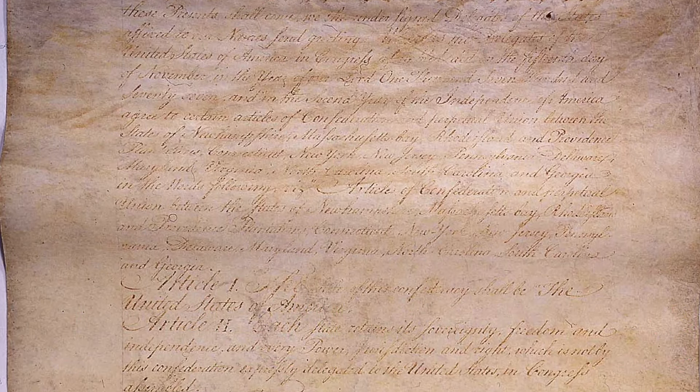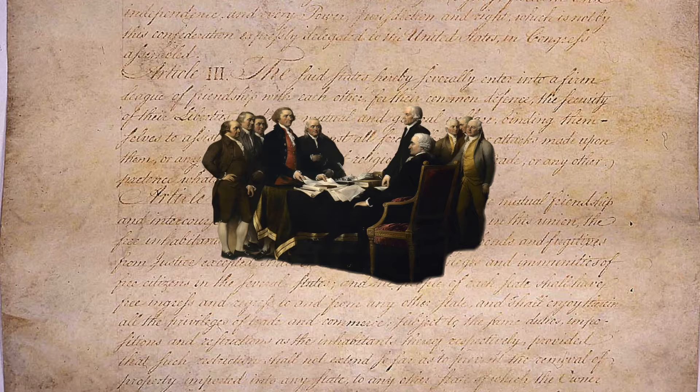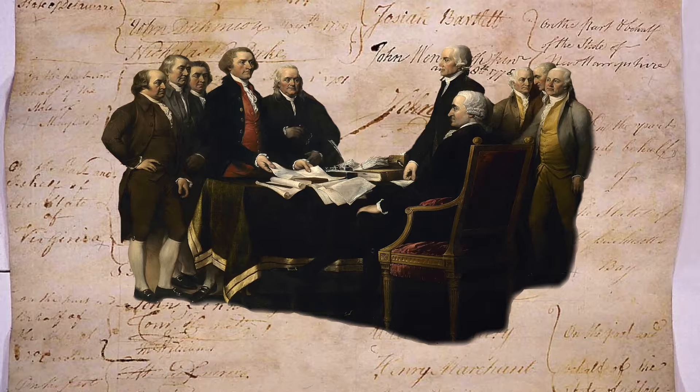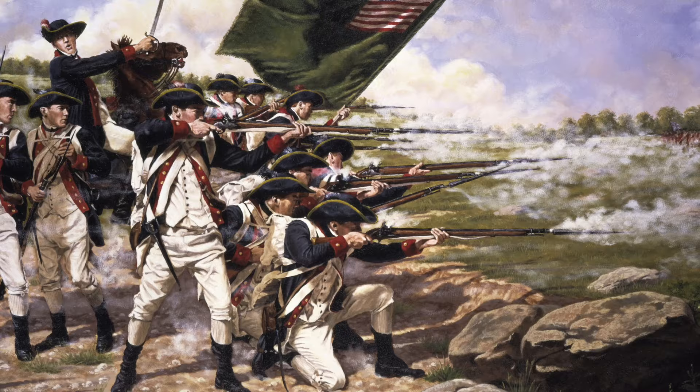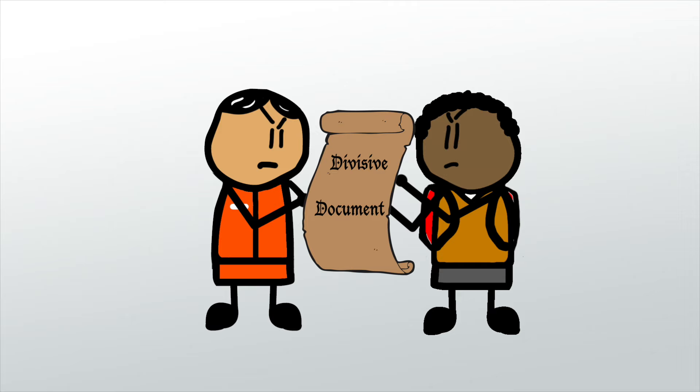The 1780s proved to be a volatile year in United States history. The Articles of Confederation, the original United States governing document ratified in 1781, had provided an inadequate governmental structure. The economy, which plummeted following the Anglo-American Revolution, was struggling to rebound. Additionally, citizens were divided due to contentious politics.